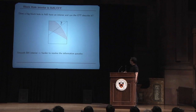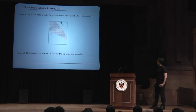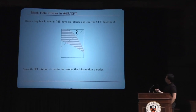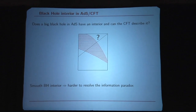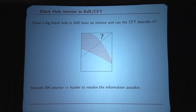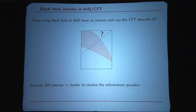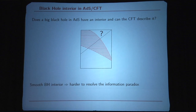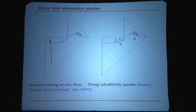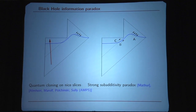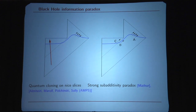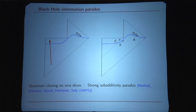The main question we want to understand is whether a big black hole in AdS has a smooth interior and whether the CFT can describe it. In principle this would be a well-defined question with a definite answer in the framework of AdS-CFT, but as we heard in the previous talk there is no agreement about it. The problem is that if we have a smooth interior then it becomes harder to resolve the information paradox — the information of the infalling matter seems to be duplicated in the outgoing radiation, which leads to unacceptable quantum cloning. This argument has been refined recently in terms of the paradox of the strong sub-additivity of entanglement entropy by Samir and the AMPS collaboration.